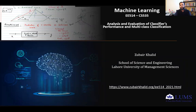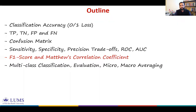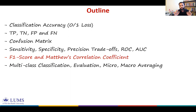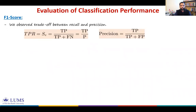Bismillah ar-Rahman ar-Rahim. Asalamu alaykum. Welcome back. We were talking about different metrics to evaluate the performance of classifiers. We saw the trade-off between sensitivity and specificity, and sensitivity and precision. In this video, we'll focus on sensitivity and precision. We'll talk about different metrics that combine these two and form a single metric to evaluate the performance of a classifier. Let's start with one such metric: F1 score.